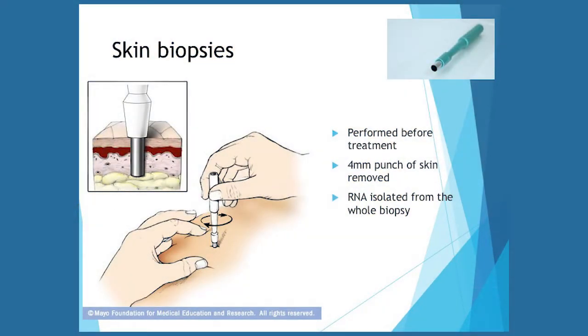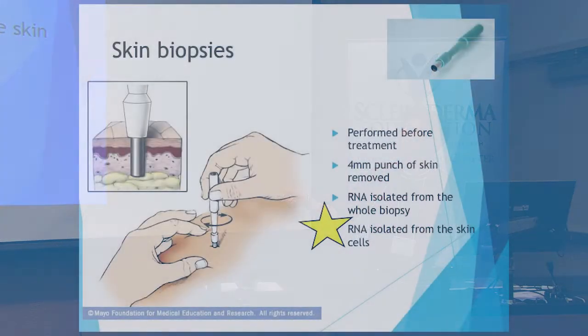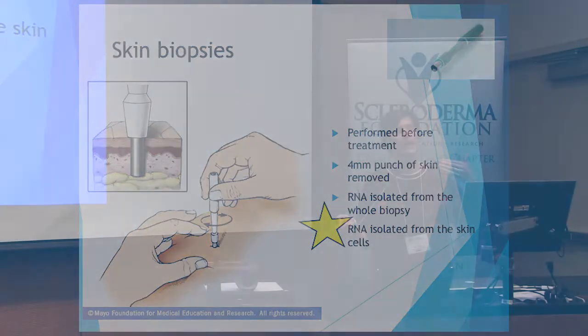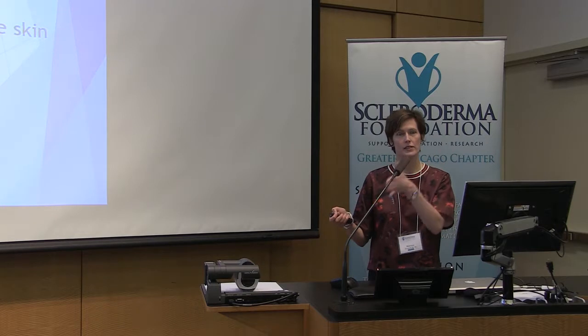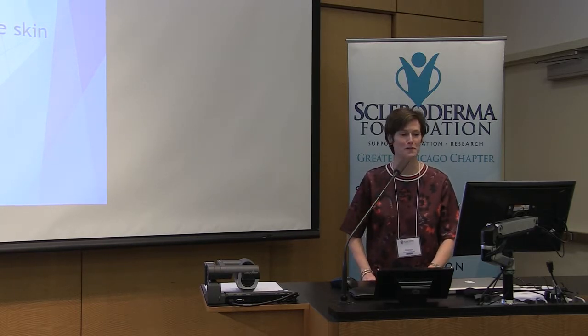I started doing skin biopsies — I've had six of my own, so I would never do anything to you that I wouldn't do to myself. We do skin biopsies on the arm and the back using an instrument that pokes down into the skin and removes a small circle about the size of a pencil eraser. We use that to isolate RNA from the whole biopsy. More recently, we're starting to isolate RNA from the actual cells in the skin by sorting the different cell types out and then doing experiments on those.